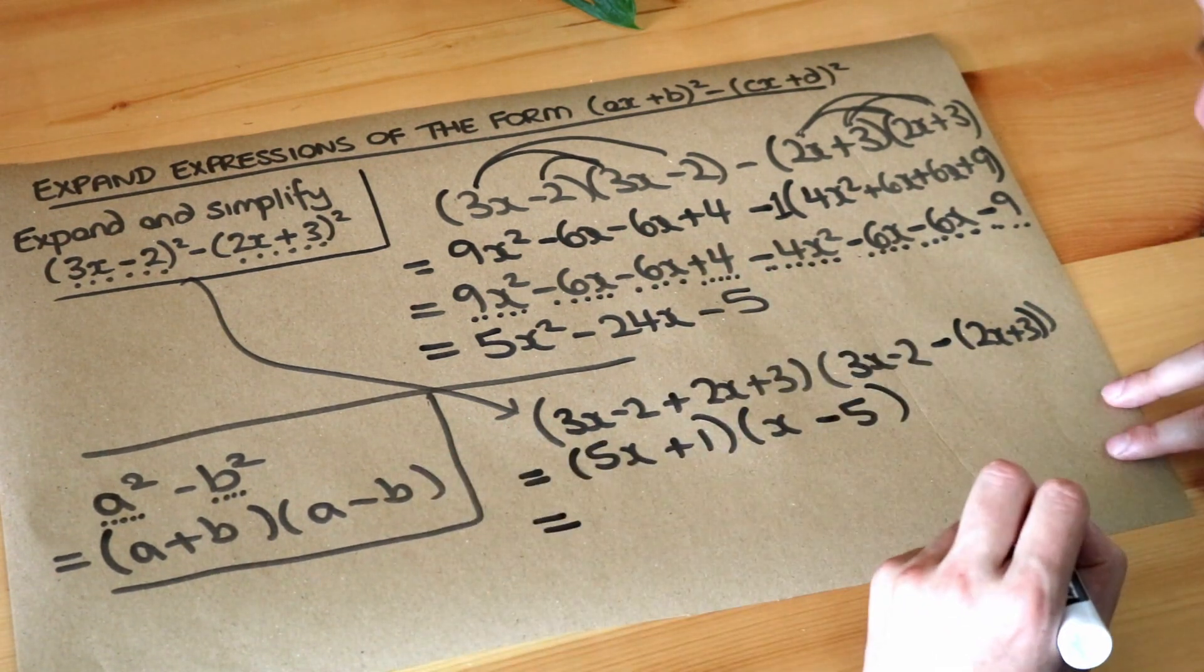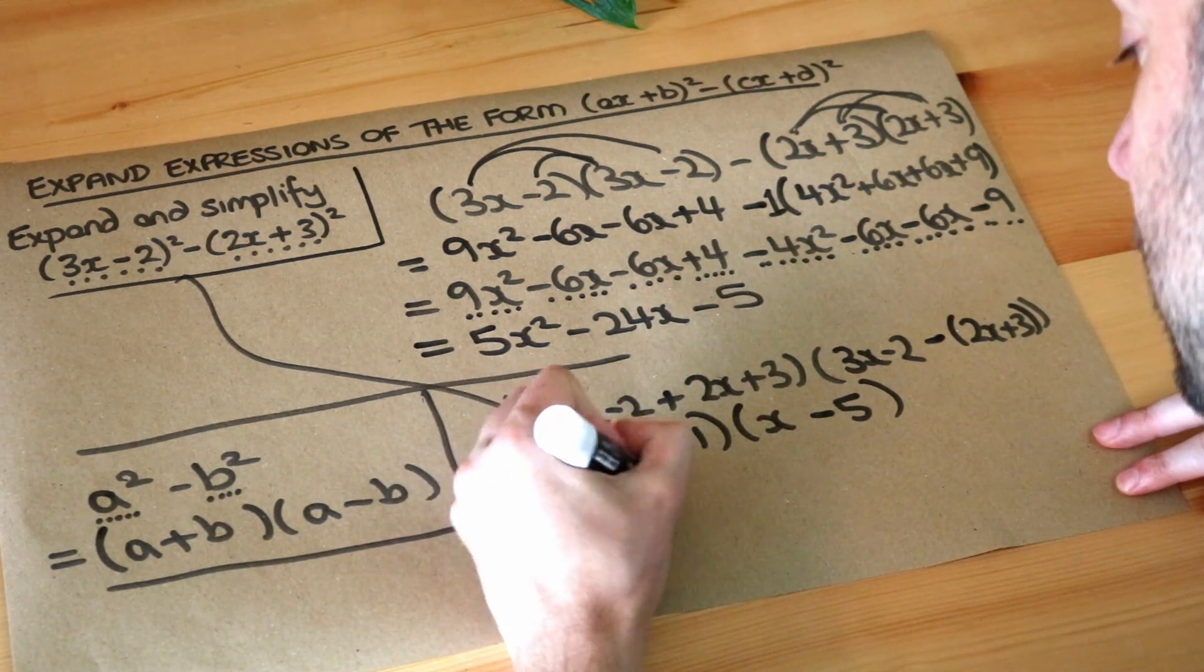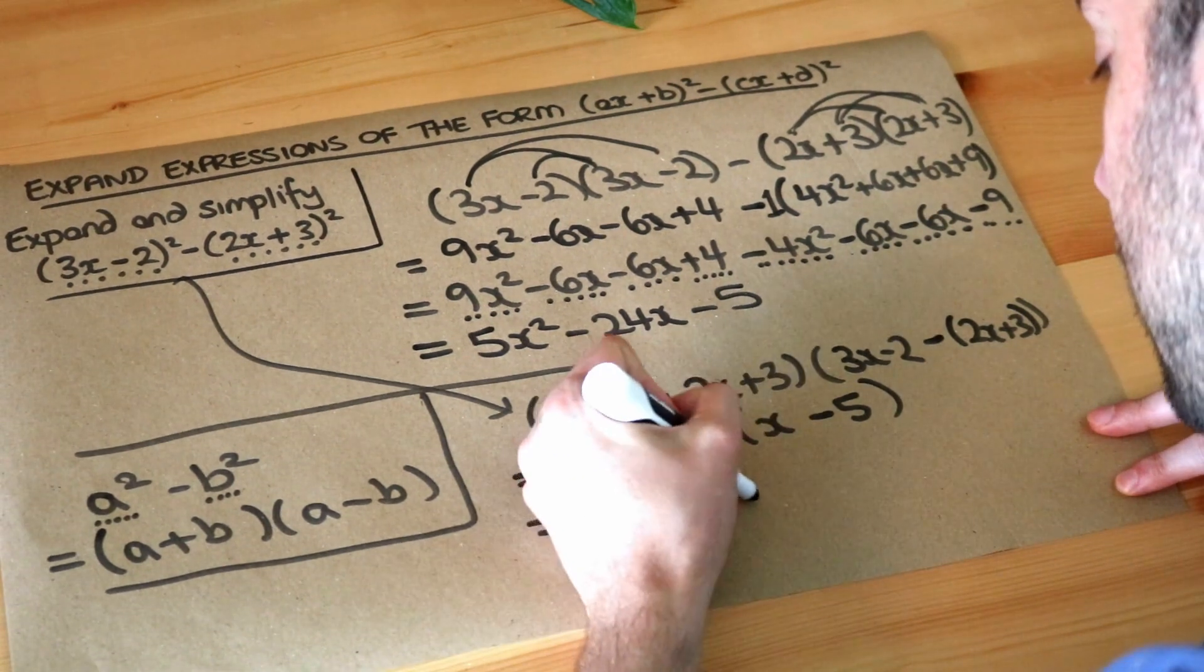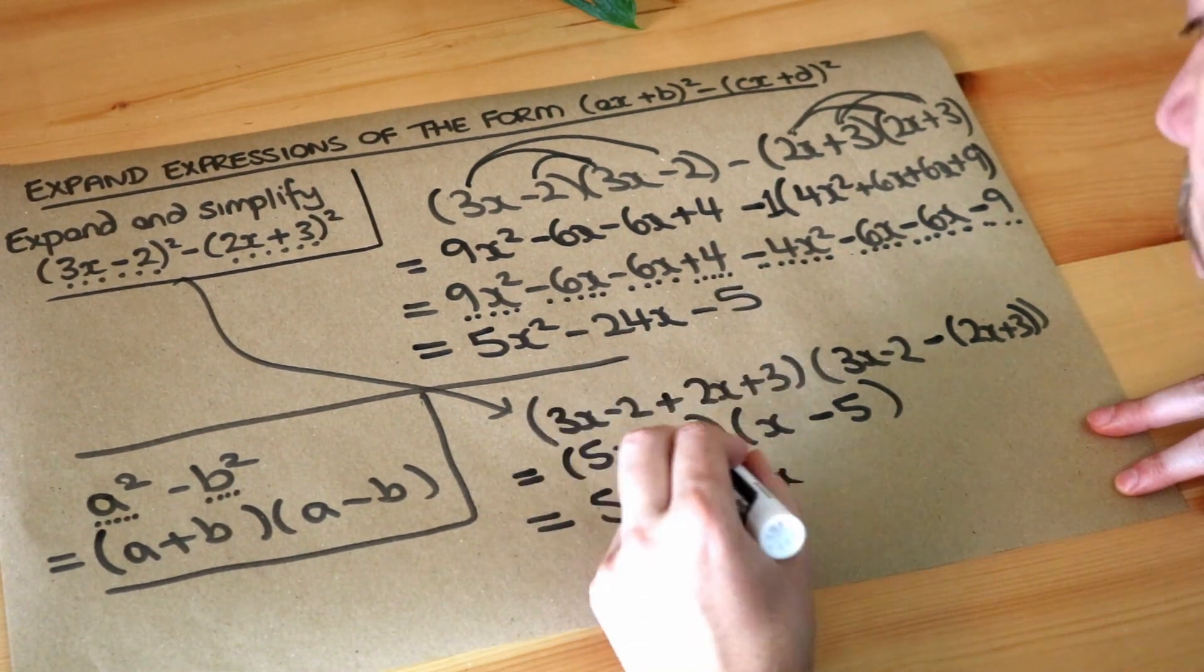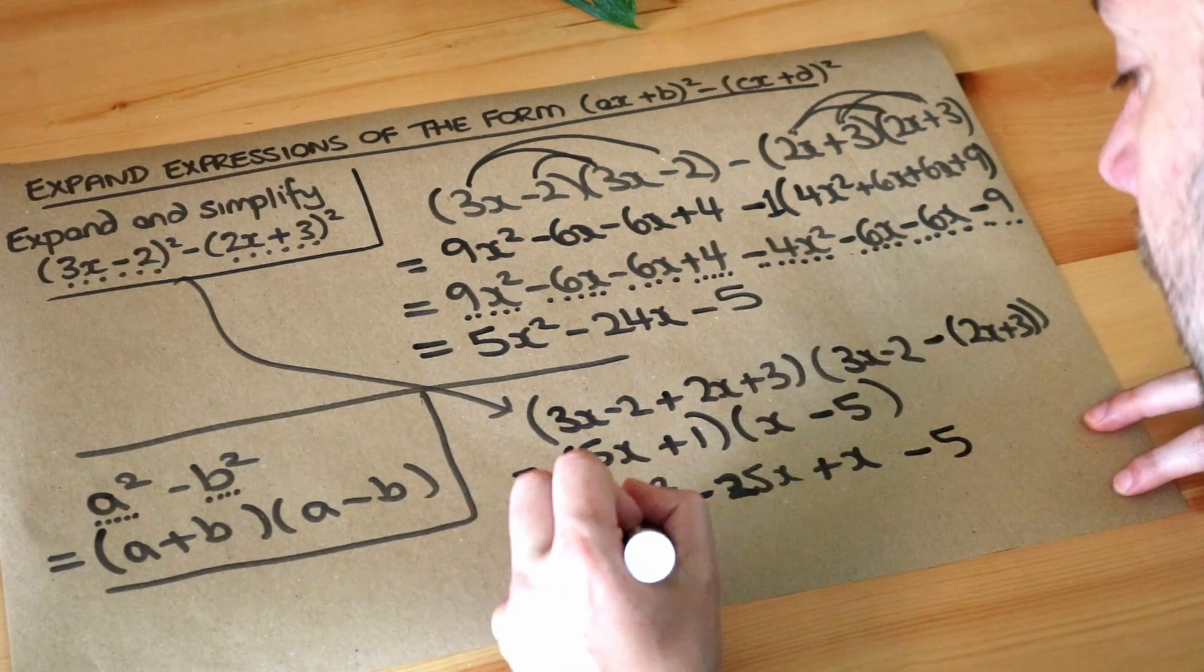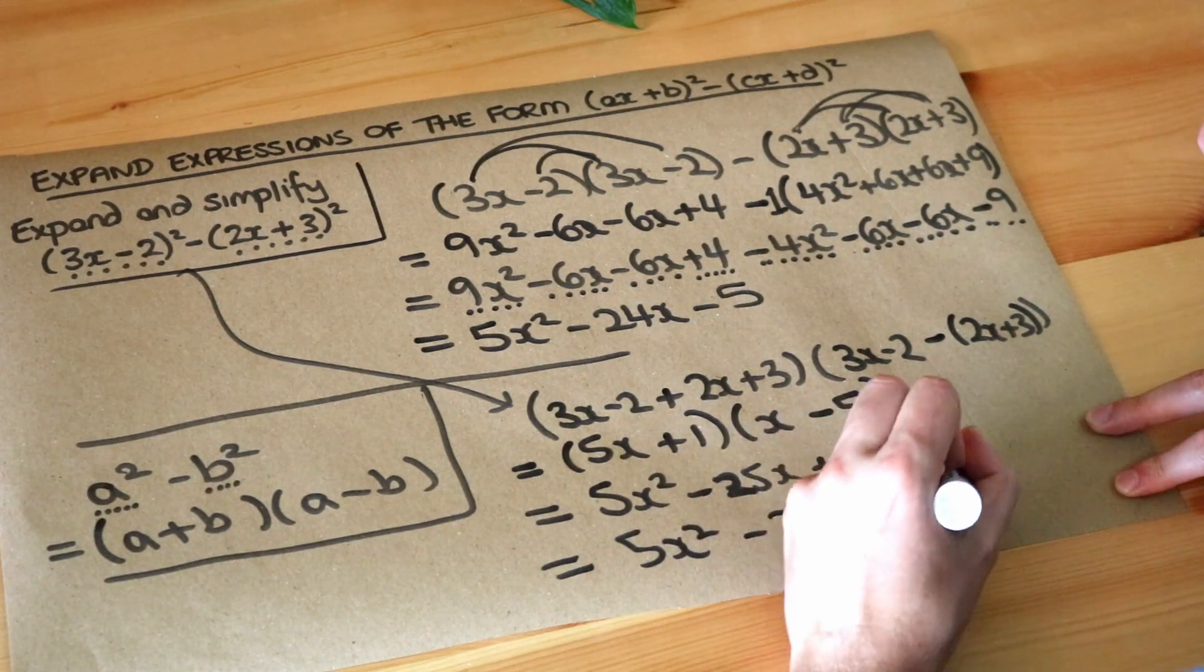And now we've just got two brackets which we can just expand out. We've got 5x times x which is 5x², 5x times -5 which is -25x. We've got 1 times x which is +x. We've got 1 times -5 which is -5. And that gives you 5x² - 24x - 5.